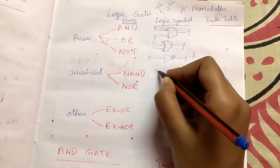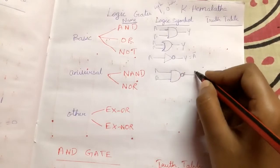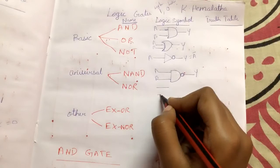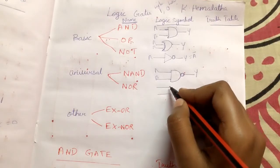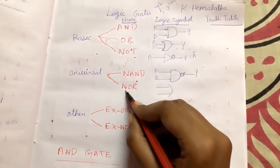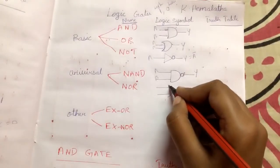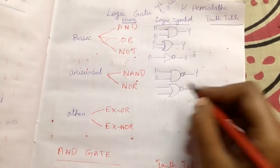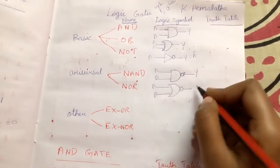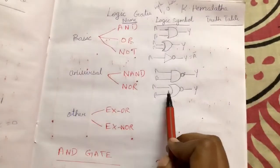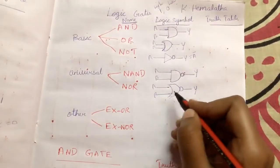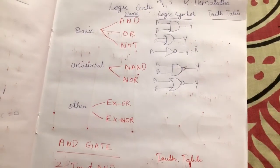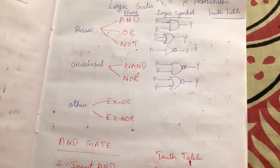For NAND gate, the input is A and B and the output is Y. Next is the NOR gate — for NOR gate I am showing two symbols. NOR means it is the NOR of the OR operator, looking similar to the OR operator with a bubble added. The inputs are A and B and the output is Y. This is the NOR operator representation. These two gates — NAND and NOR — are called the universal logical gates.